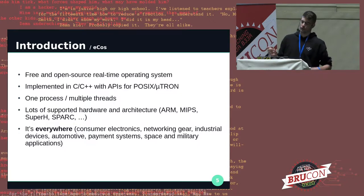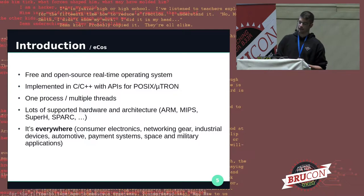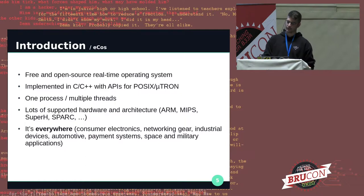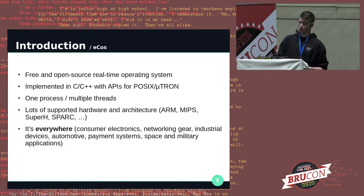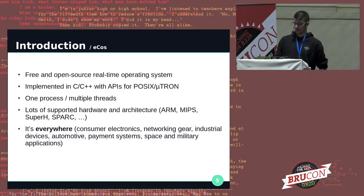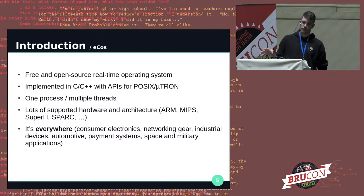ECOS is everywhere: consumer electronics like the wireless chipsets of PlayStations, networking gear like routers and switches, industrial devices like PLCs, payment systems like smart cards and readers in shops — mostly in Europe — satellites in space, and missile launcher controllers. Most of them run on ECOS, and the latest release is close to 10 years old. But given its applications, it's there to stay for some time.